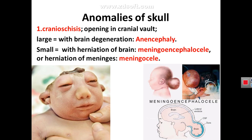Anomalies of the skull are many. There may be an opening in the skull. A large opening in the cranial vault, as seen in some cases, allows amniotic fluid cells to engulf the brain, resulting in degeneration of the brain — a condition called anencephaly. A small opening may lead to herniation of the brain and meninges, called meningoencephalocele, or herniation of only the meninges, called meningocele. This first anomaly — an opening in the skull — is called cranioschisis.